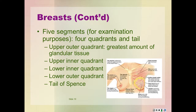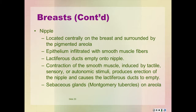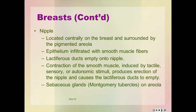In the axilla, the mammary tissue is in direct contact with the axillary lymph nodes. The nipple is located centrally on the breast and is surrounded by the pigmented areola. The nipple is composed of epithelium that is infiltrated with circular and longitudinal smooth muscle fibers. Contraction of the smooth muscle, induced by tactile, sensory, or autonomic stimuli, produces erection of the nipple and causes the lactiferous ducts to open. Tiny sebaceous glands may be apparent on the areola surface, called Montgomery tubercles or follicles. Hair follicles may be found about the circumference of the areola.